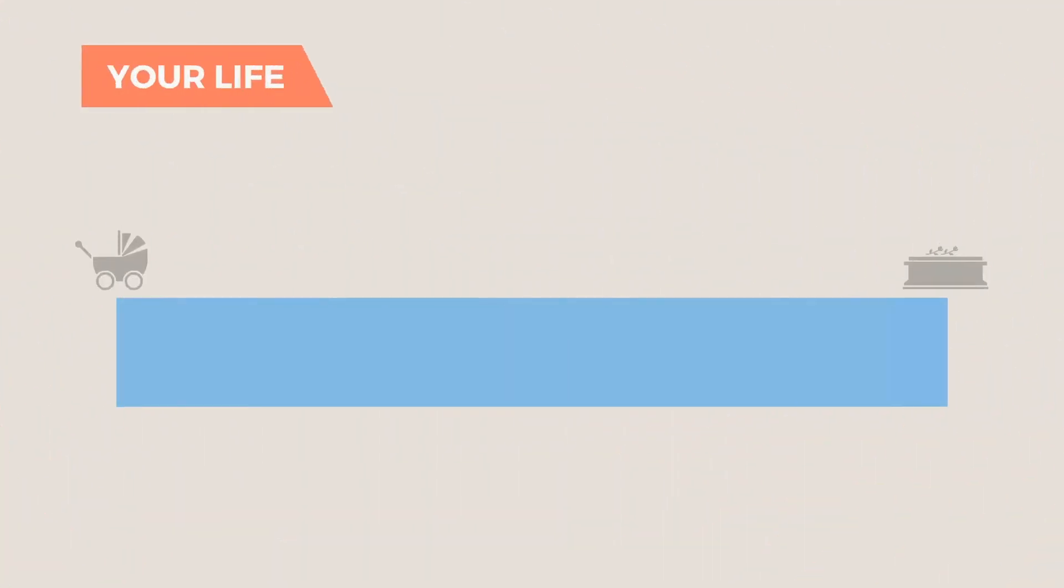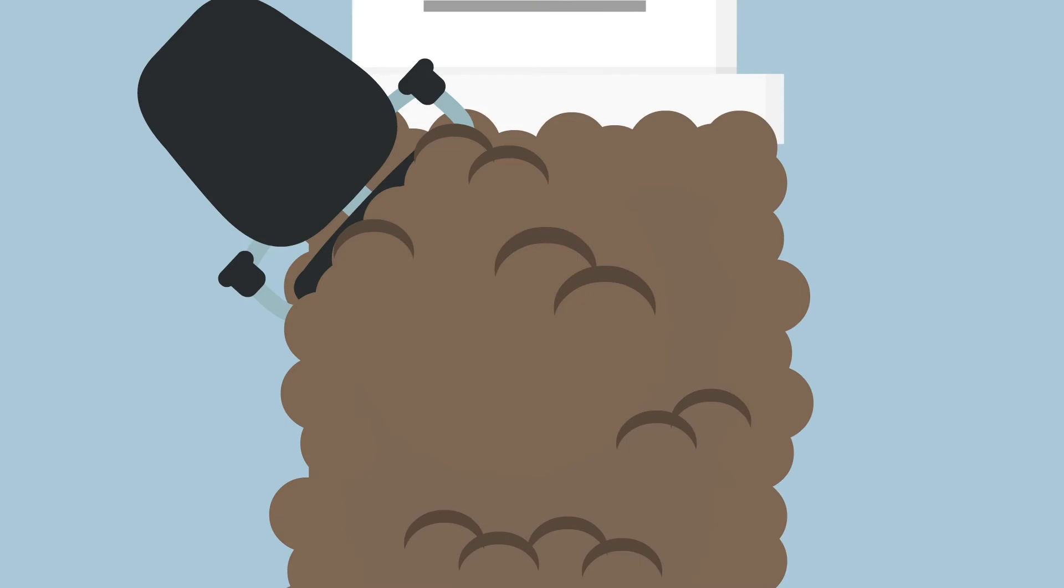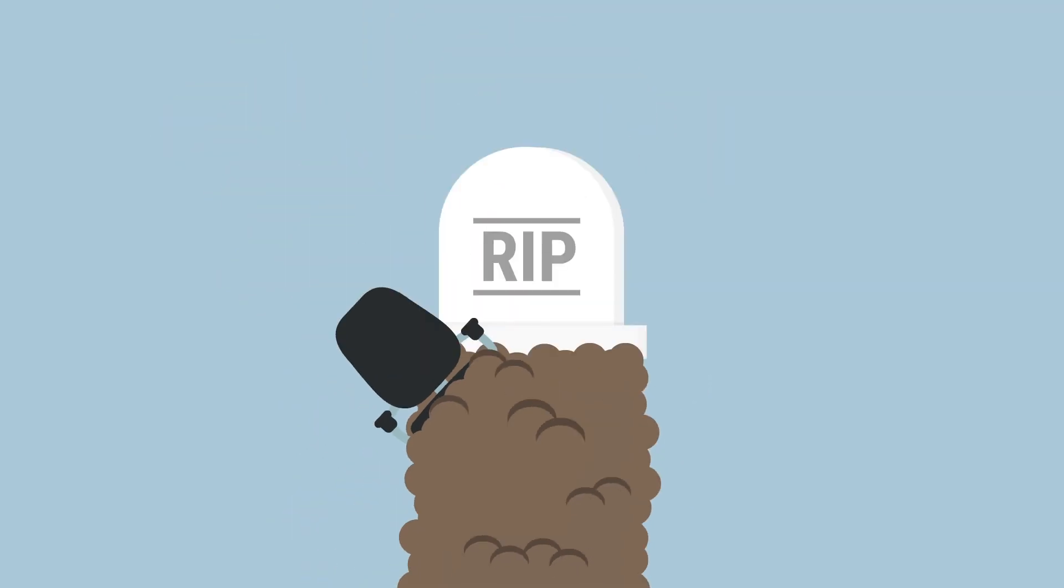Perhaps most shocking of all, sitting for over 6 hours a day for a decade or two can actually result in you losing 7 quality-adjusted life years. So, simply put, sitting can kill you. That's the bad news.